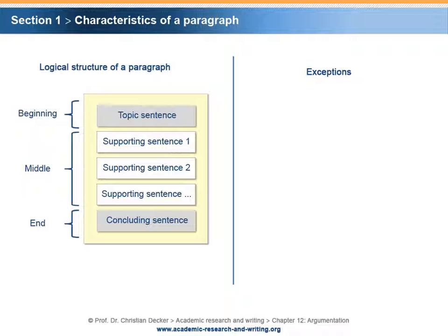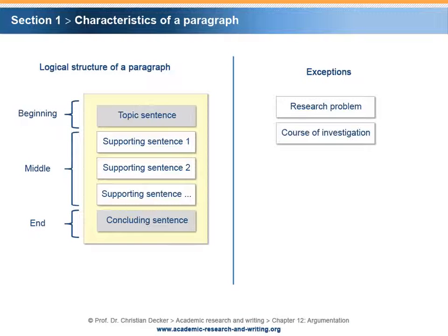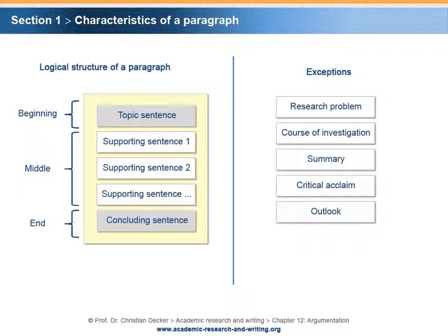Please note, the three-part structure is a helpful means for logical argumentation in your text. However, there are categories of text units where this three-part structure does not necessarily apply. These text units refer to the research problem, the cause of investigation, the summary, the critical acclaim, and the outlook. Additionally, if a paragraph consists of a simple list of facts, data, etc., again, the three-part structure is not applied.